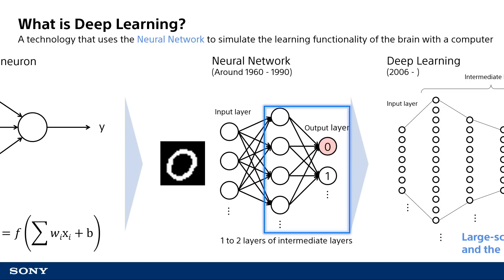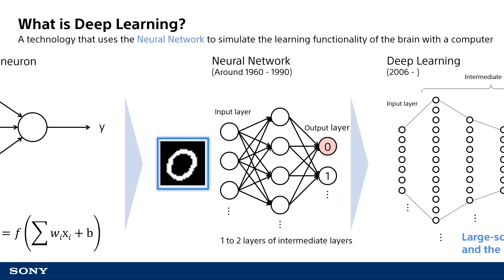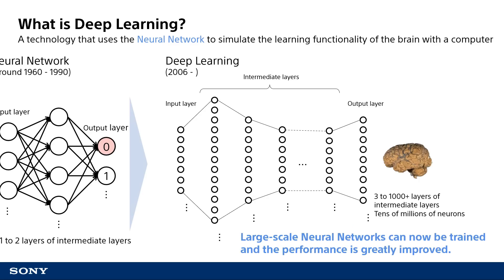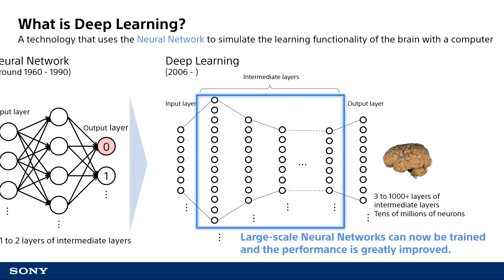For example, when an image of zero enters a sufficiently trained neural network, the computation from left to right ends up outputting large values only for the artificial neuron corresponding to zero, while other neurons do not output any signal. This is how the functionality of correctly classifying an input image as zero is implemented. Deep learning is the neural network with increased numbers of neurons or layers. In deep learning, the number of intermediate layers can be more than 3, and in some cases more than 1000, making the neural network very deep. The number of neurons can also be in the tens of millions for large networks.